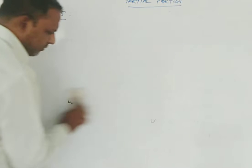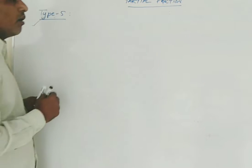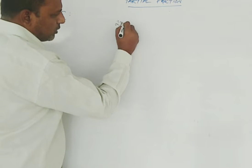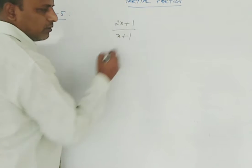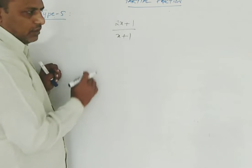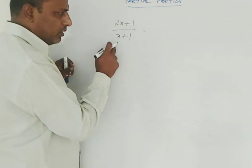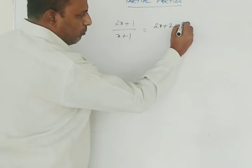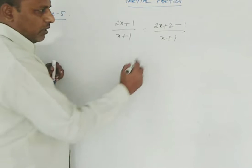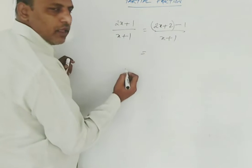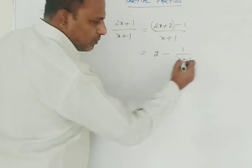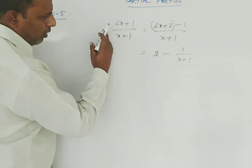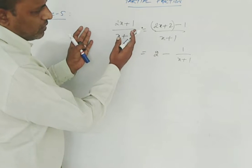We write the coefficient of f of x by the highest degree term divided by the coefficient of the highest degree term of g of x. For example, take 2x plus 1 by x plus 1. How to split it into partial fractions? Using trial and error method — partial fractions can also be done through trial and error. Write it as 2x plus 2 minus 1 by x plus 1, adding and subtracting 1. This can be written as 2 minus 1 by x plus 1. This is split into two rational fractions.